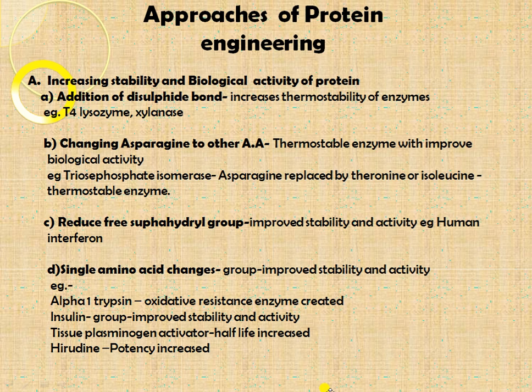For example, in triosephosphate isomerase, asparagine is replaced by threonine or isoleucine to produce thermostable triosephosphate isomerase. Reducing free sulfhydryl groups improves stability and activity — removing free sulfhydryl groups increases activity and stability, as seen in human interferon. Single amino acid changes can improve stability and increase activity: in trypsin, oxidative resistance is improved by single amino acid replacement; in insulin, improved stability and activity are achieved; and in tissue plasminogen activator — useful for dissolving blood clots — whose half-life is very short, slight changes in amino acid sequence modify the half-life.